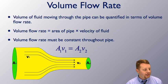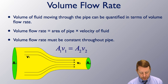Volume flow rate. The volume of fluid moving through the pipe can be quantified in terms of that volume flow rate, where the volume flow rate is the area of the pipe times the velocity of the fluid at that point in the pipe. So area times velocity is going to give you the volume flow rate. That has to be constant throughout the pipe regardless of diameter.